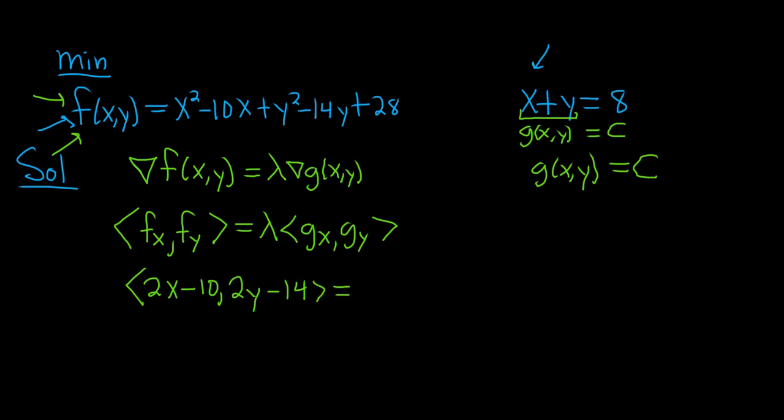This is equal to lambda. g_x is simply 1 (the derivative of x is 1, the derivative of y is 0). And g_y: the derivative of x is 0, and the derivative of y is 1. We can now multiply the lambda through, so this is lambda, lambda.